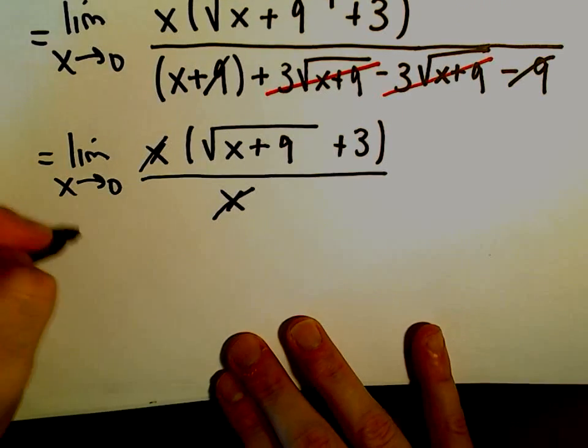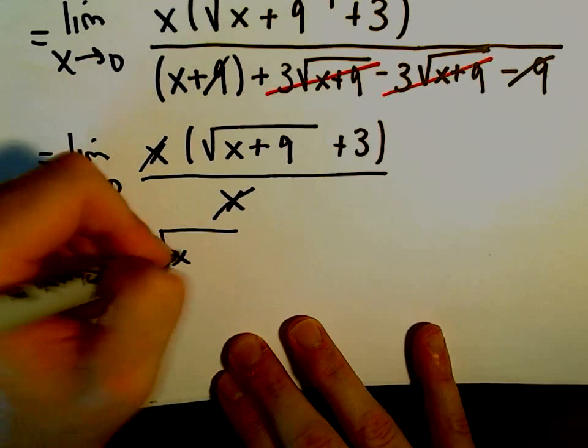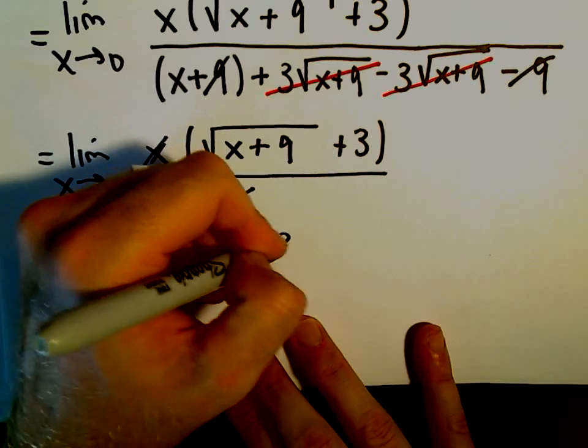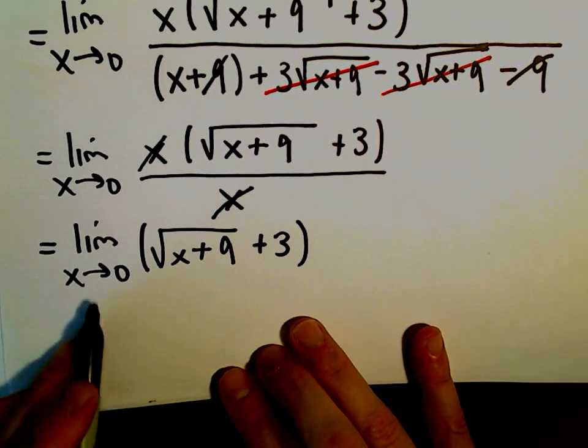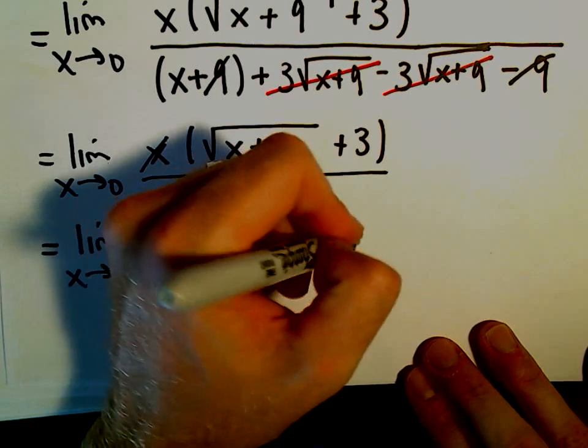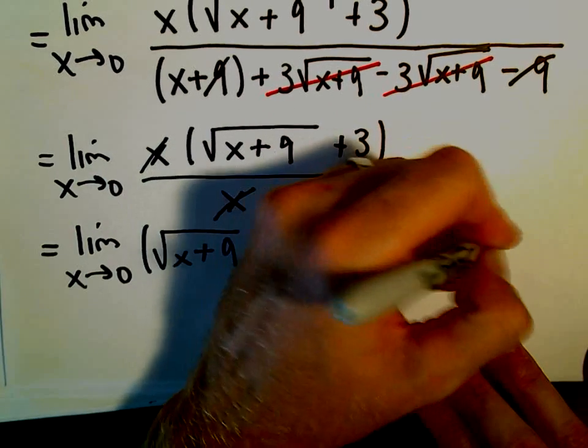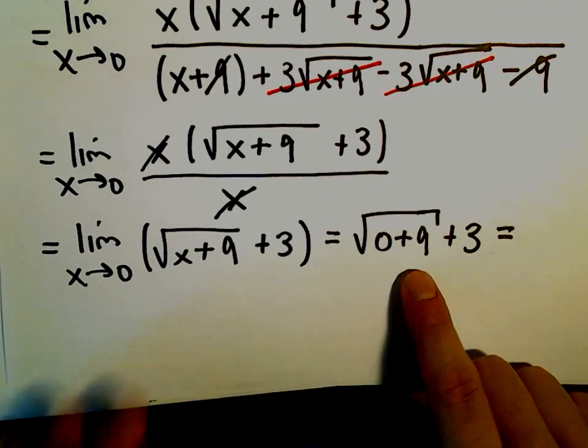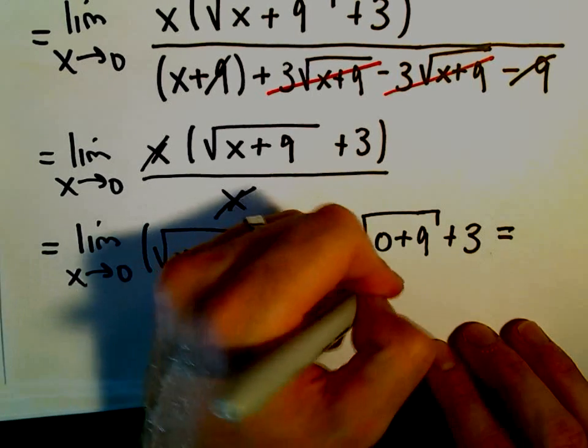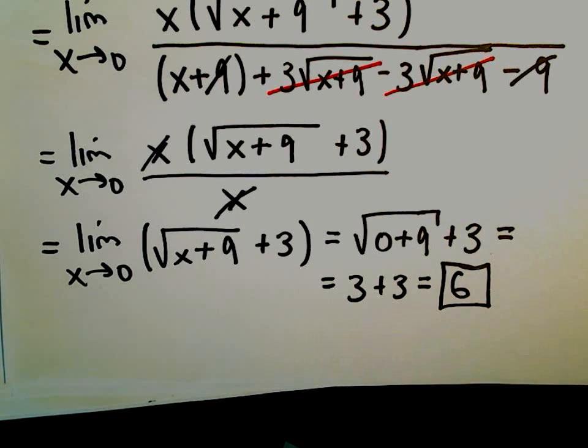we've now got the square root of x plus 9 plus 3. That's all we have left. And now we can simply plug in our x equals 0. That'll give us the square root of 0 plus 9 plus 3. Well, the square root of 9 is just 3 plus 3, and we'll get our solution in this case as the value positive 6.